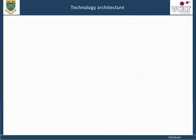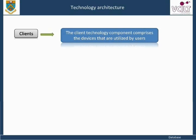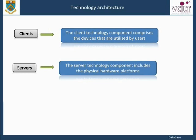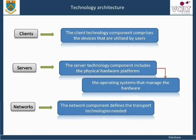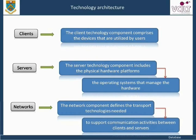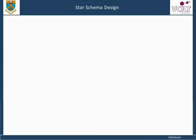In the Technology Architecture section of the blueprint, hardware, software, and network topology are specified to support the implementation of the data warehouse. The client technology component comprises the devices utilized by users. The server technology component includes physical hardware platforms and the operating systems that manage the hardware. The network component defines the transport technologies needed to support communication between clients and servers.